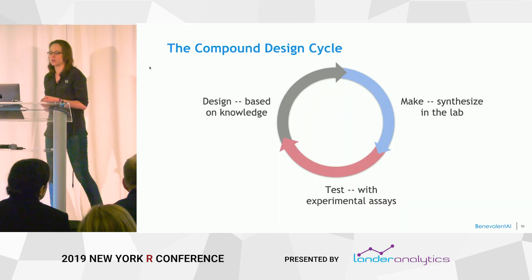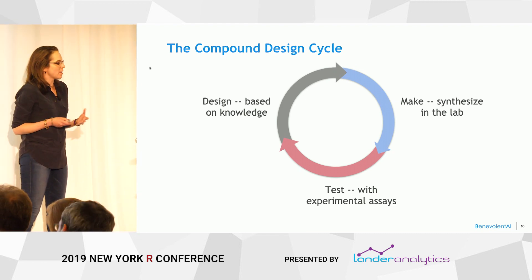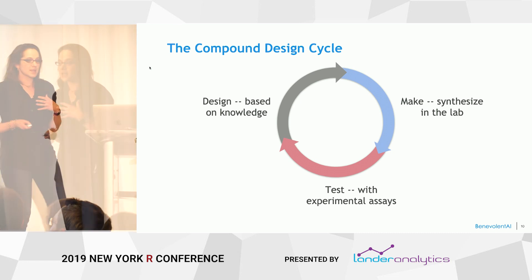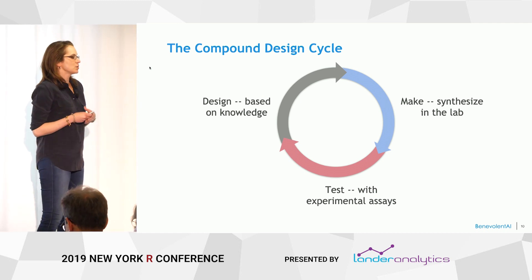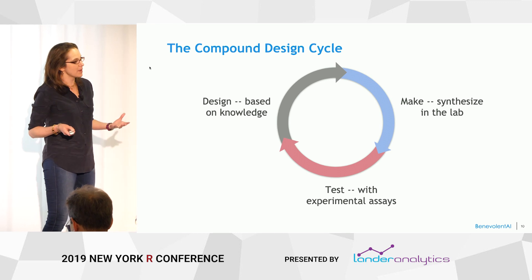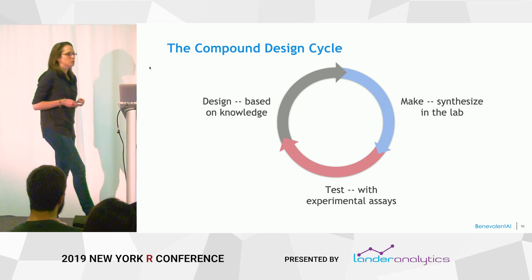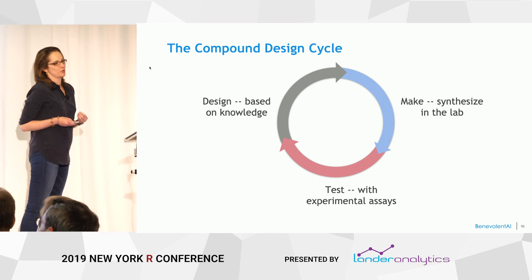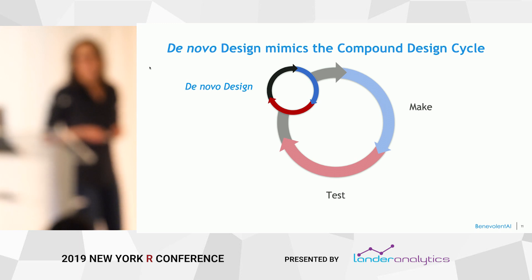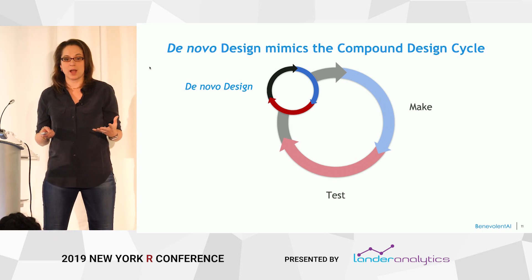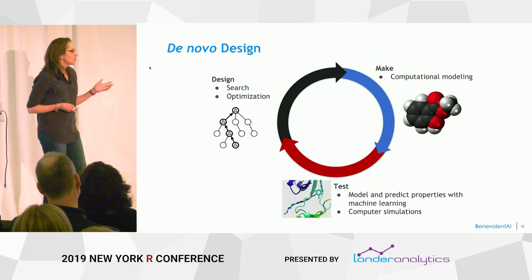This is what the compound design cycle looks like. A chemist, based on experimental knowledge, will design a compound, then synthesize it — usually through a multi-step process in the lab — and then test it through a variety of experimental assays. However, if we supplement our chemist with an AI version, we can accelerate this process by doing some of these steps in silico. We call this the de novo design process, and it parallels what happens in real life. In the computational sense, we design a compound through search and optimization policies.